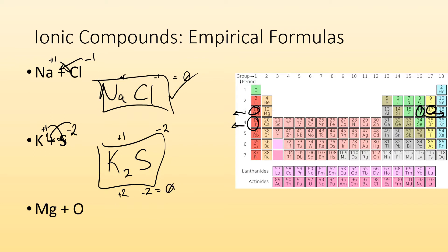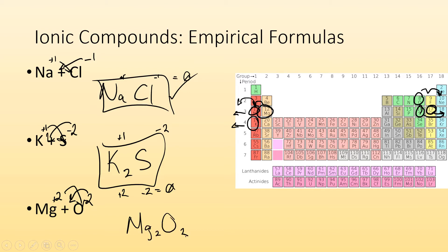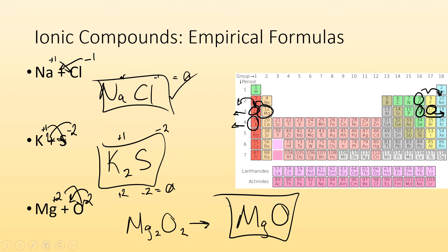Mg and O. Mg is in group two, so it's going to lose two electrons and end up like neon — it's going to be plus two. Oxygen is in group 16 and wants to gain two electrons, so it's going to be minus two. Now watch out — you've got to remember to simplify. If I do the swap I end up with Mg₂O₂, but I can simplify that. Two and two can be divided by two, so I just end up with an empirical formula of MgO.